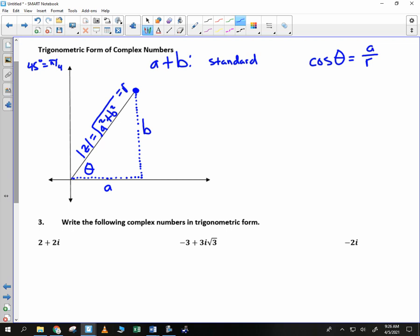I would like to make one more equation. I would like to write a relationship for b and r and theta. Sine. Sine is opposite over hypotenuse. Sine of theta is opposite, which is b, divided by r.